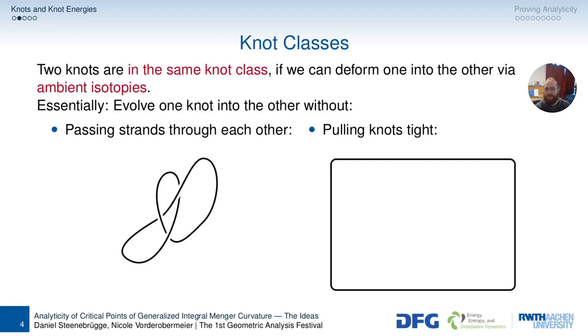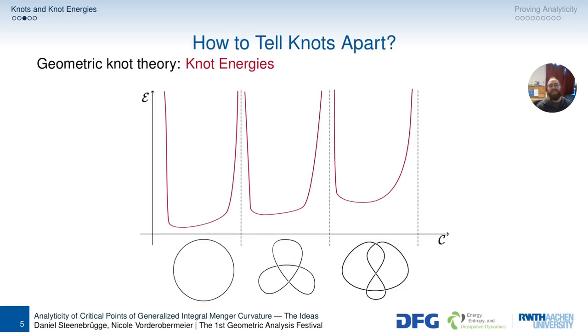And how do we tell knots apart again? Well, there are many approaches. The one I'm most familiar with is called knot energies, and you have this functional that maps the knot into the real numbers, or the positive into the positive numbers, and you want the knot classes to be separated by infinitely high energy walls. So actually this graphic can be found in quite similar fashion in a paper of my advisor, but since there was copyright, I had to do my own one for YouTube.